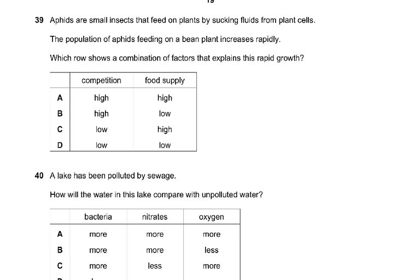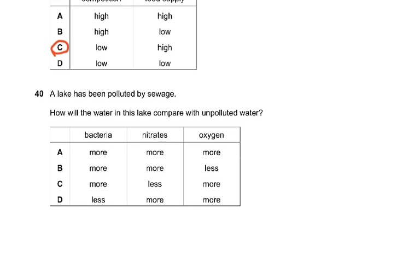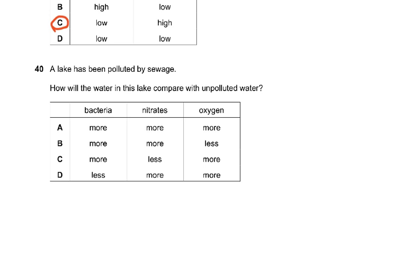Question 39. Aphids are small insects that feed on plants by sucking fluids from plant cells. The population of aphids feeding on a bean plant increases rapidly. Which combination of factors explains this rapid growth? Competition has to be low and food supply has to be high. Question 40: a lake has been polluted by sewage. How will the water compare with unpolluted water? The lake water will contain more bacteria and more nitrates, but less oxygen. More sewage means more decomposing matter, more bacteria that respire and use up the oxygen — that is called the biochemical oxygen demand, BOD.